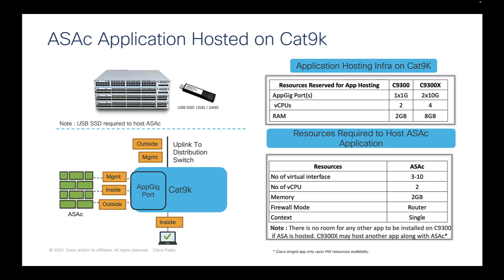Now let's take a look at hardware requirements and how applications run on Catalyst 9300. The Catalyst 9300 model provides 2 vCPU and 2 GB of RAM, while the 9300X model provides 4 vCPU and 8 GB of RAM for application hosting. ASAc requires a minimum of 2 vCPU and 2 GB of RAM, with a minimum of 3 logical interfaces where you can define the management IP, the inside network, and outside network.